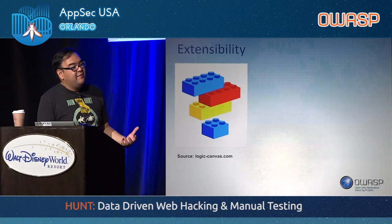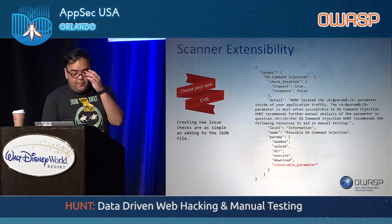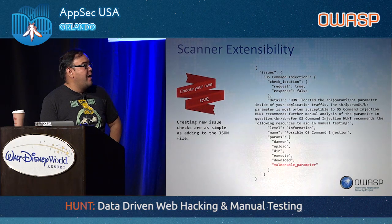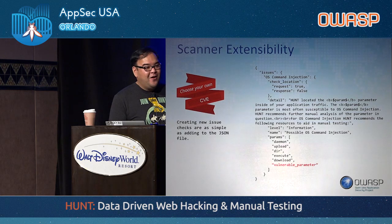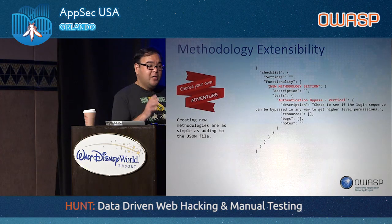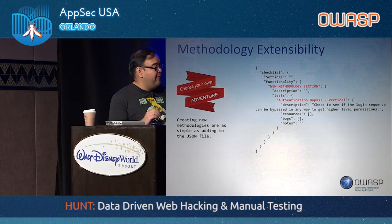Let's talk about extensibility again. We wanted to give you guys the building blocks to do your testing the way you want to do it. In terms of scanner extensibility, it all comes down to that JSON file. An issue in the JSON file — let's say you wanted to add another parameter for OS command injection. You might say 'JP, you're a moron, this vulnerable parameter isn't included in your dataset.' That's fine — you can add it into your own JSON file and you'll find it whenever you're doing your testing. On the methodology side of extensibility, all you need to do is add new functionality in the JSON. As long as you follow the actual schema, the tool will build it out in those menus and tables.